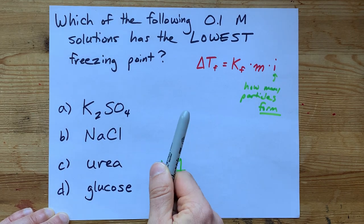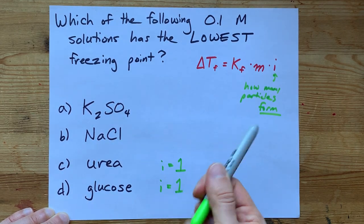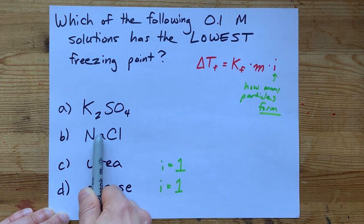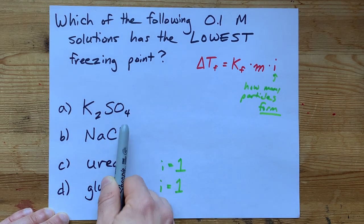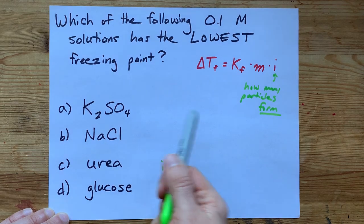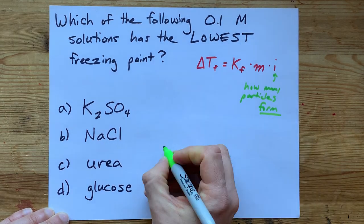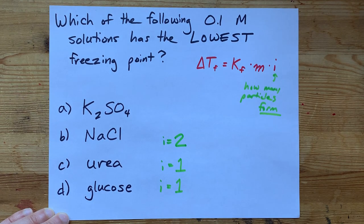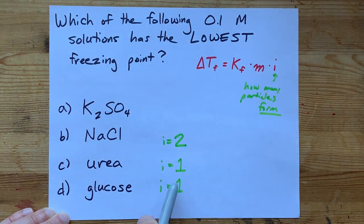NaCl is ionic, though. What happens when you dissolve an ionic compound in water? It breaks up into its constituent ions. This makes an Na+ and a Cl-. How many particles was that? That was two particles, two different ions. Therefore, i equals 2. The Van't Hoff factor is 2.